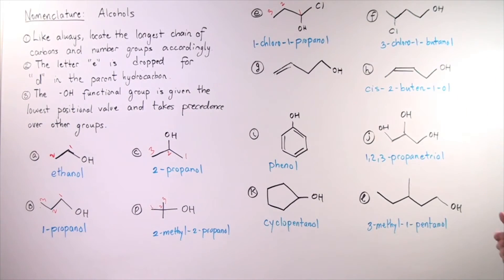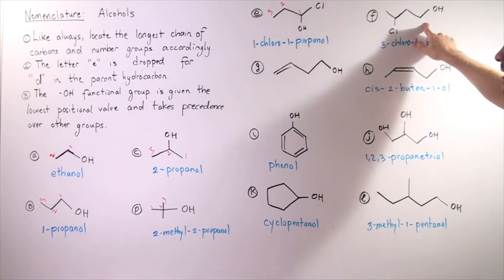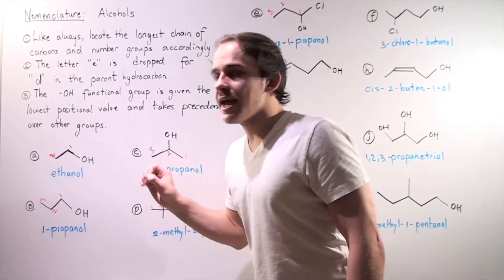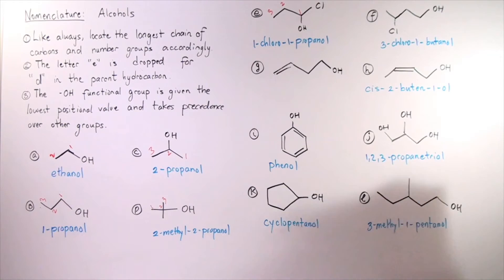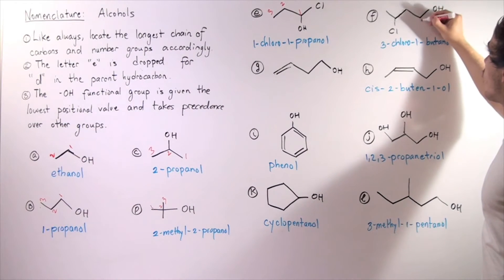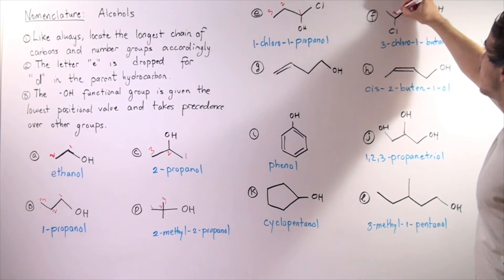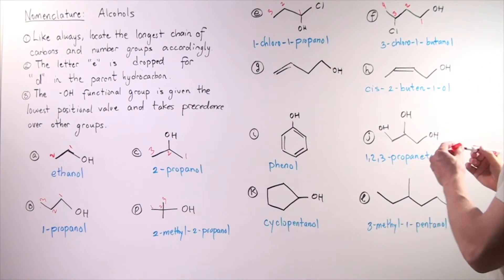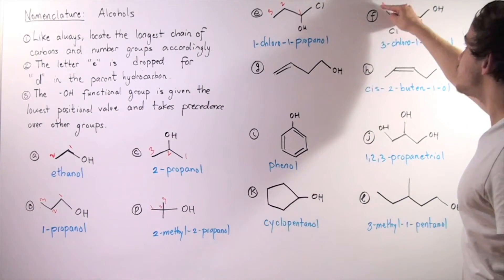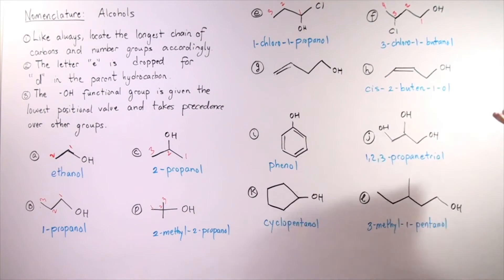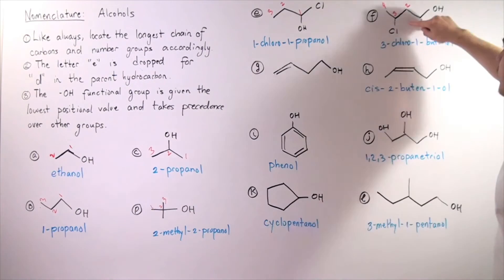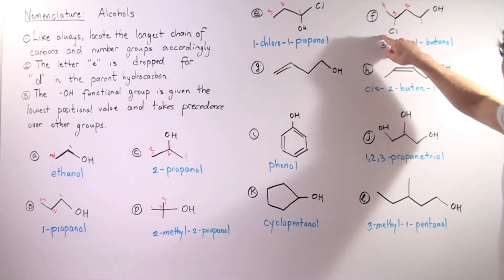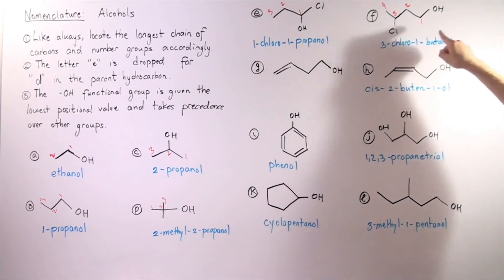Example F: the same exact story. Where do we begin — from this end or from this end? Recall, rule three states that the hydroxy group takes precedence over all other groups. That means we start on this end: one, two, three, four. We have a four-carbon chain, so we have butanol with our hydroxy on the first carbon. The third position has our chlorine, so the name is 3-chloro-1-butanol.